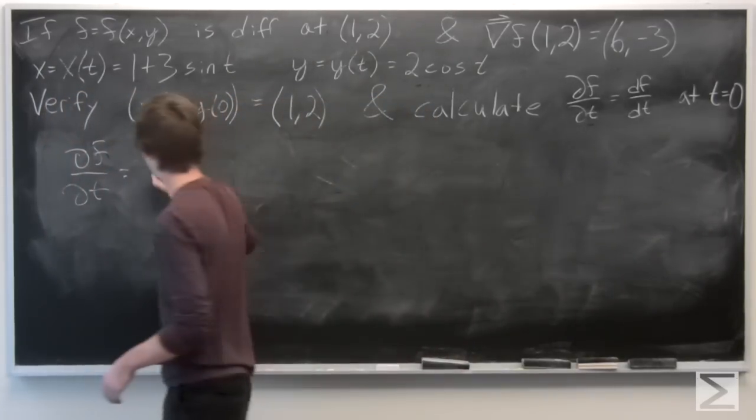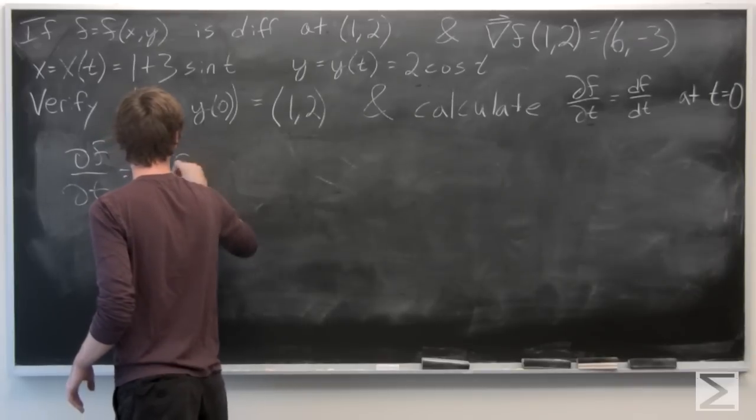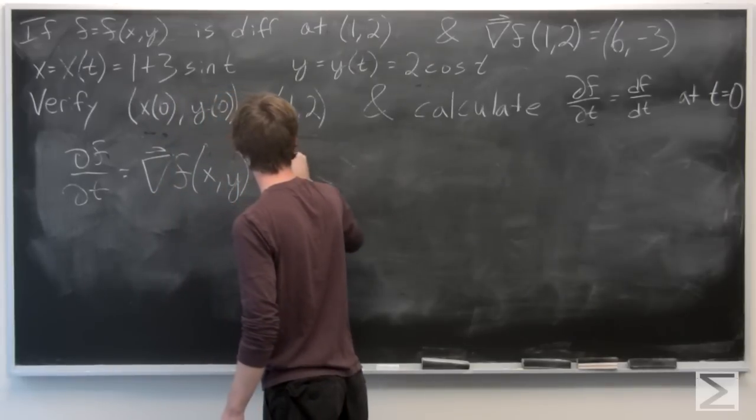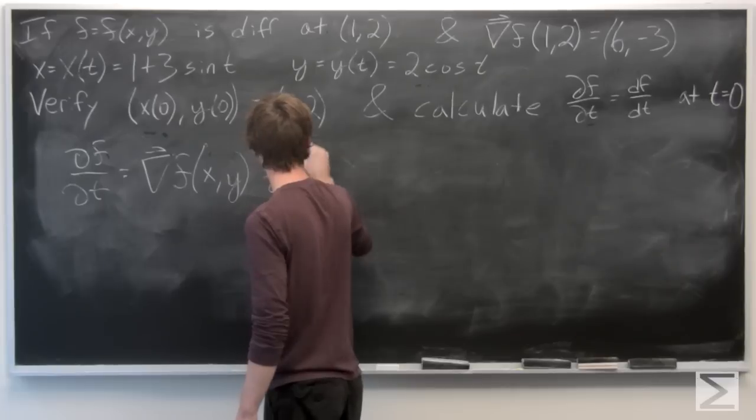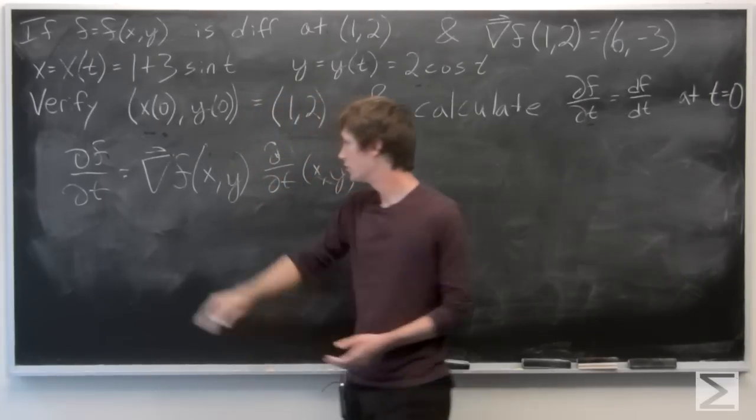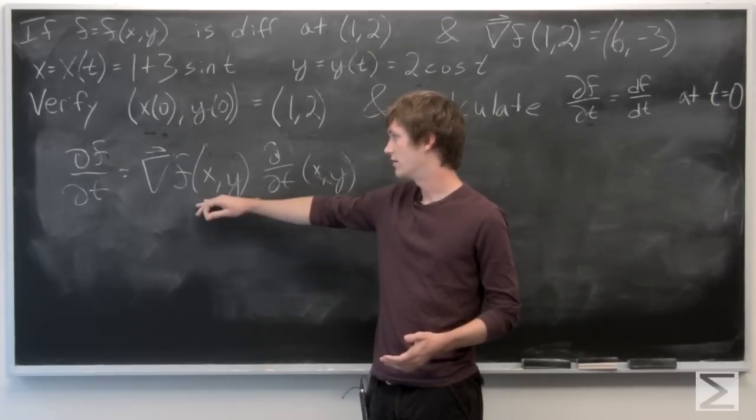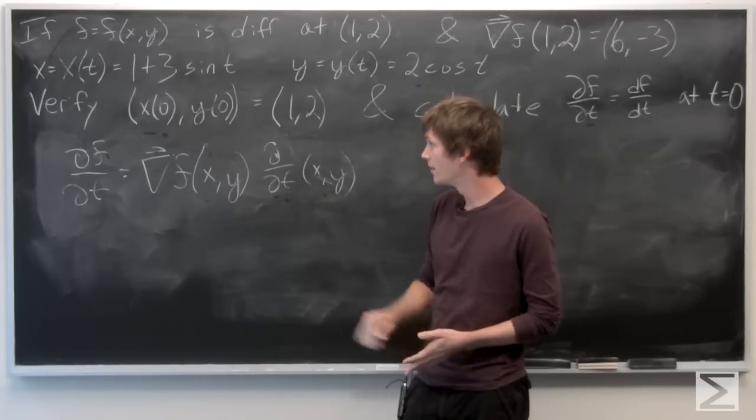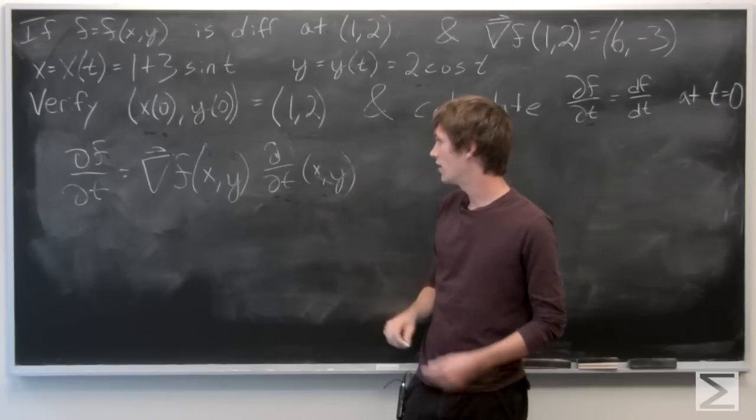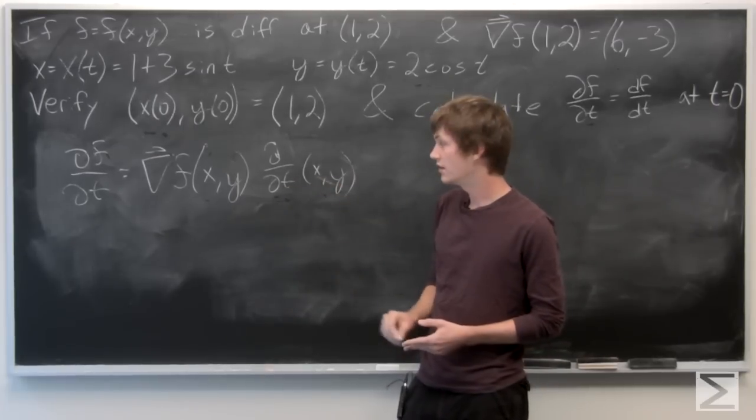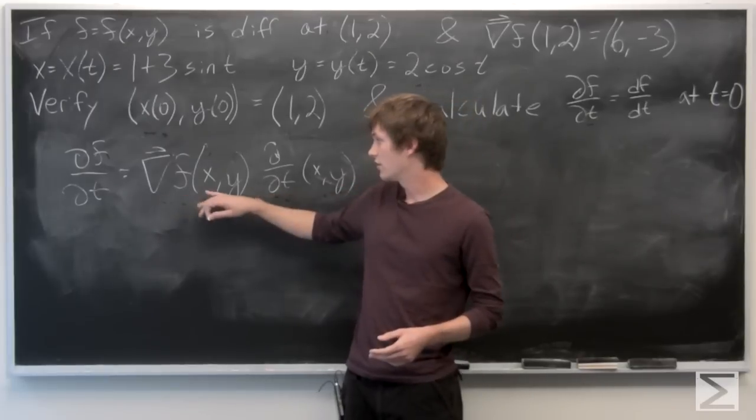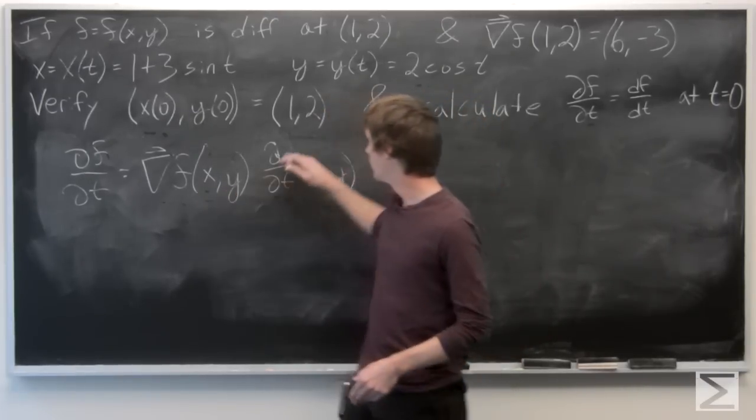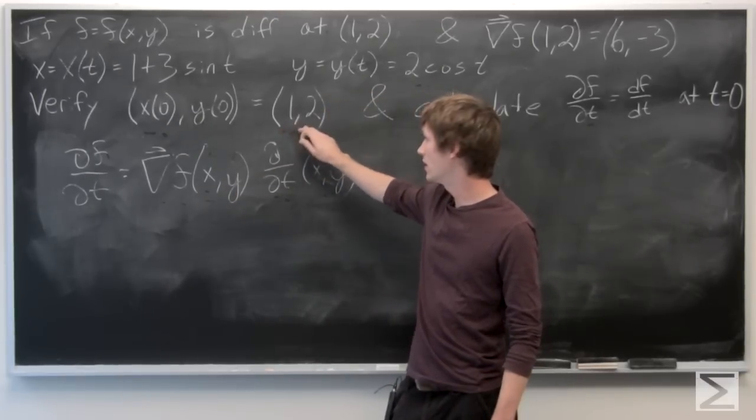Now for the partial derivative of f with respect to t. These are functions x of t and y of t, so we can take the partial derivative of those in the normal way with respect to t. And then the gradient vector, this is going to be f of x of t and y of t. And when t is equal to 0, we know that x of 0 equals 1 and y of 0 equals 2.